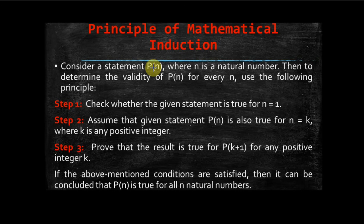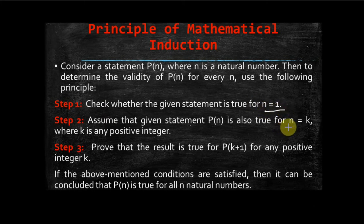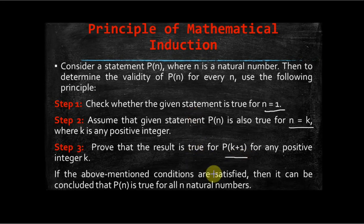P(n) is a statement we want to prove for any natural number. You have to follow three steps: first, prove the result is true for n = 1; second, assume the result is true for n = k; and third, prove the result for n = k + 1. If these three steps are satisfied, then P(n) is true for any natural number n.